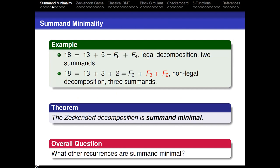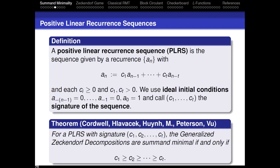For example, if we take 18, we can write it as 13 plus 5 — that's its Zeckendorf decomposition. But we could also write it as 13 plus 3 plus 2, which has more summands. You could ask: what is the fewest number of summands needed to represent a number? It turns out no decomposition ever uses fewer summands than the Zeckendorf decomposition. You could have something with exactly the same number — for example, 10 is 8 plus 2, but also 5 plus 5. But Zeckendorf is always minimal. How do you prove that nothing can use fewer summands, and can you generalize this to more general recurrences?